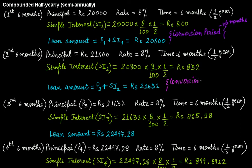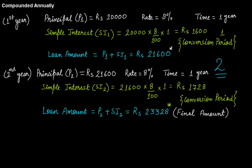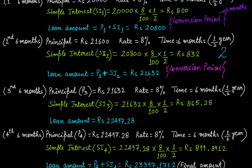In the case of interest compounded semi-annually, the conversion period is six months, meaning there are two conversion periods in one year. Compared to annual compounding where there was only one conversion period per year, here you have two. Proceeding further, 21,632 becomes the principal for the third six-month period at 8%. You calculate the interest and find the loan amount at the end of the third period of six months — this is another conversion period.